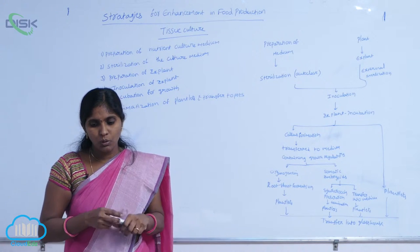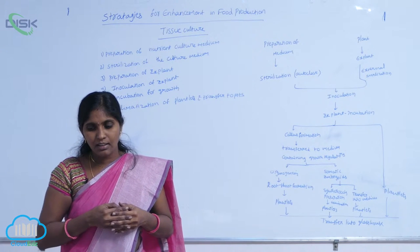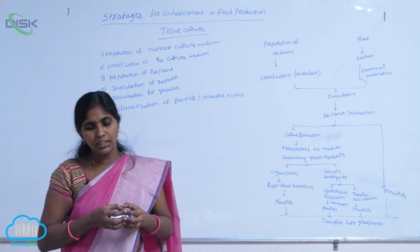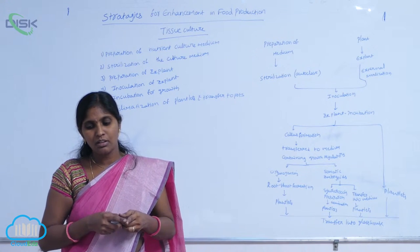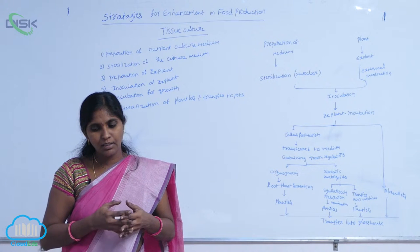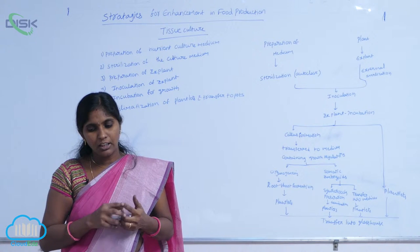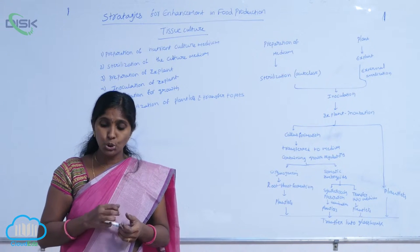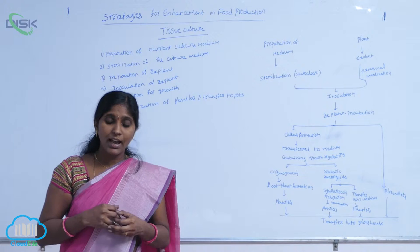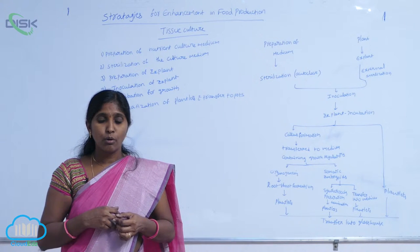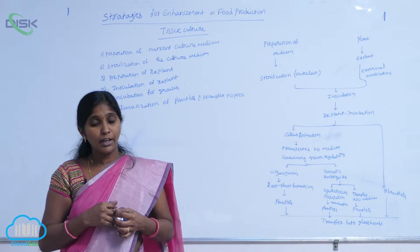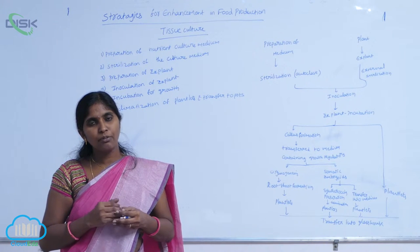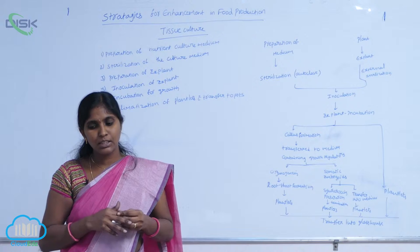The parts selected as explant include terminal bud or axial part, leaf, stem cuttings, root apex, shoot apex, anthers, ovules, and endosperm. Any one of these can be selected as explant.